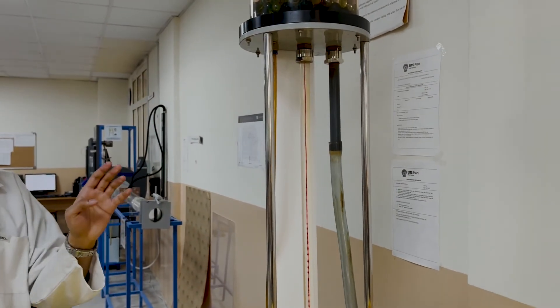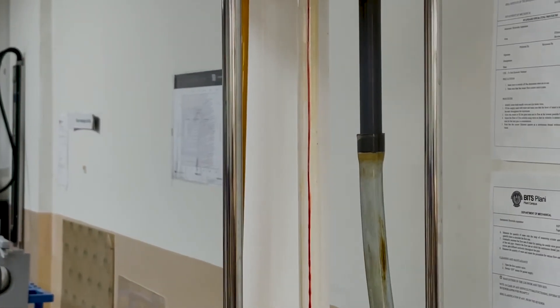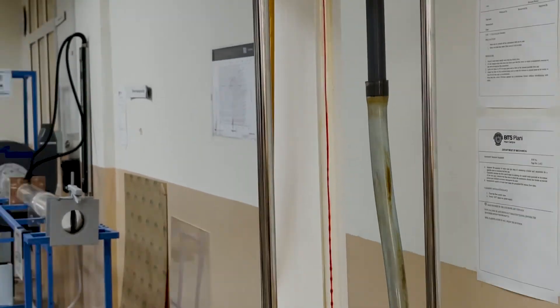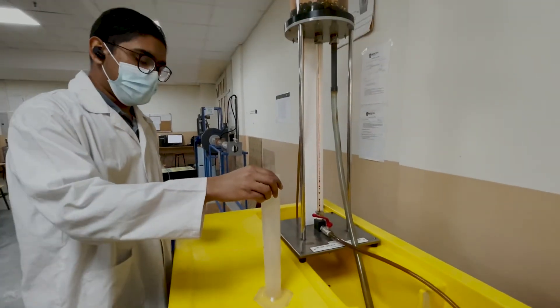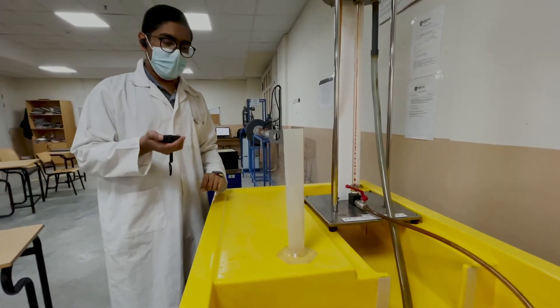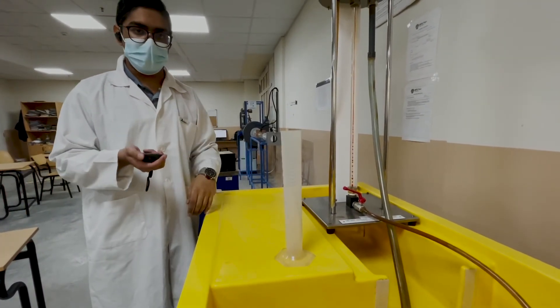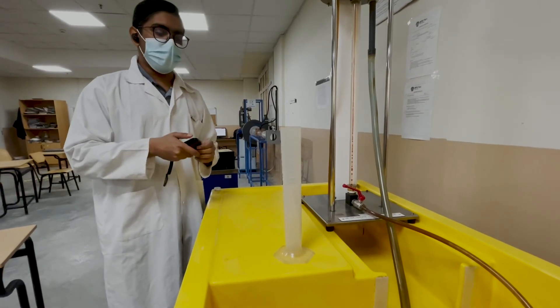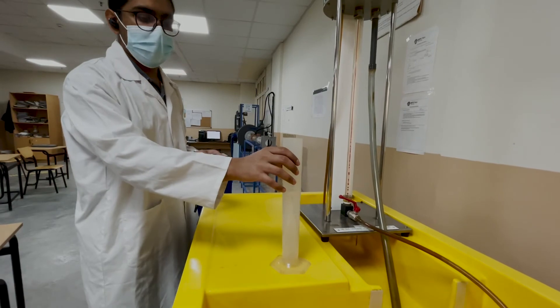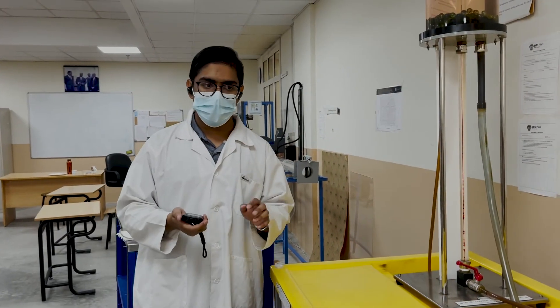To verify whether this thing is laminar or not, we have to collect the water in measuring cylinder which is here. We have to collect the water in this measuring cylinder using stopwatch to measure the time and how much water has been collected in that much time. We can put all these values in the Reynolds number formula and we can get the value. So now laminar flow is done.